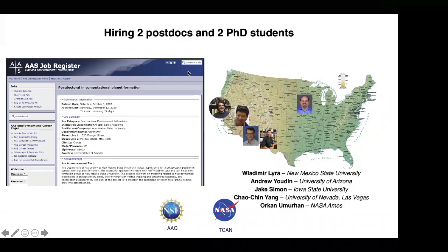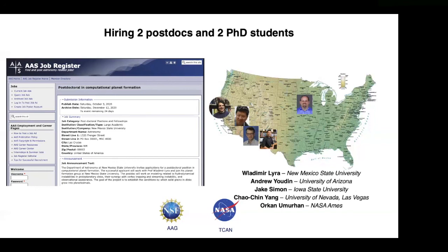Finally, I would like to advertise that we're hiring. We're hiring two postdocs and two PhD students to work on a joint project between five institutes on streaming instability and hydrodynamic instabilities. Myself at New Mexico State University and four other gentlemen here in this conference: Andrew Youdin, University of Arizona; Jake Simon, Iowa State University; Chao-Chin Yang, University of Nevada, Las Vegas; and Orkan Umurhan at NASA Ames. One of the ads is already up at the job register and the other ads are still going to go up. Thank you, and I'll take questions now.